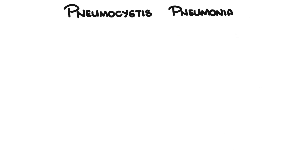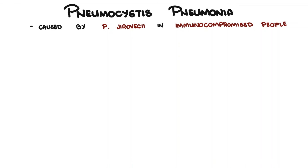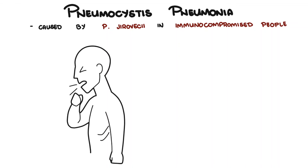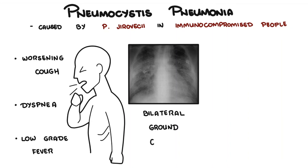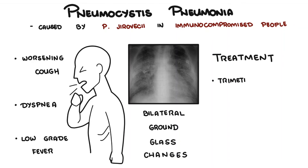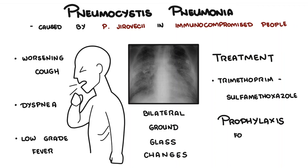In summary, Pneumocystis pneumonia is caused by Pneumocystis jirovecii in immunocompromised people with a weakened immune response. Classically, patients present with a worsening cough, dyspnea, and low-grade fevers. On x-ray, there are increased markings bilaterally with ground glass changes. Treatment is Bactrim — trimethoprim and sulfamethoxazole — and prophylaxis is important in those who are at risk as well.